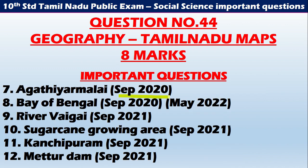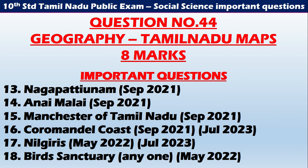Agasthiyar Malai — September 2021 and May 2022. Bay of Bengal — very important. River Kaveri — September 2021. Sugarcane growing area — September 2021. Kancheepuram — September 2021 and May 2022. Nagapattinam — September 2021. So this is all about Geography Tamil Nadu maps up to this point — a total of 18 questions so far.